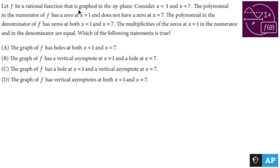Let f be a rational function that is graphed in the xy plane. Consider x equals 1 and x equals 7. The polynomial in the numerator of f has a zero at x equals 1 and does not have a zero at x equals 7.